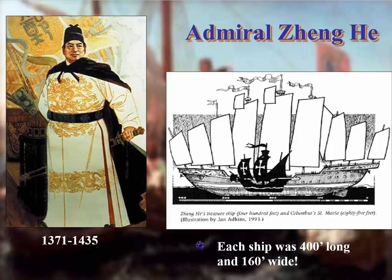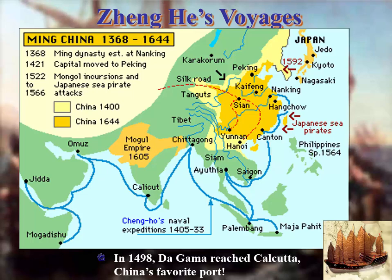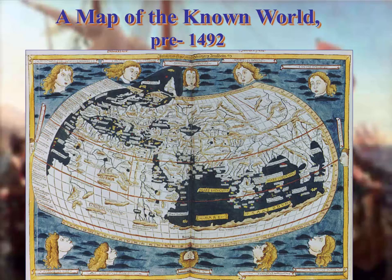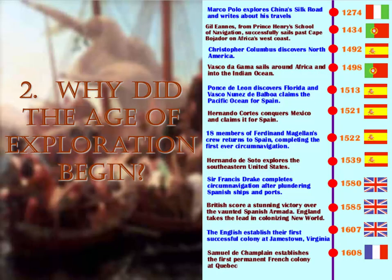Prior to this, the Chinese were avid explorers as well. You've seen the comparison of Columbus's ships to the 60 ships Zheng He traveled with across the Indian Ocean — there was already wide-scale exploration going on prior to the Europeans getting involved. Looking at a timeline, it was first the Italians, then the Portuguese, then the Spanish — who had a long reign — and then the British and French came in.